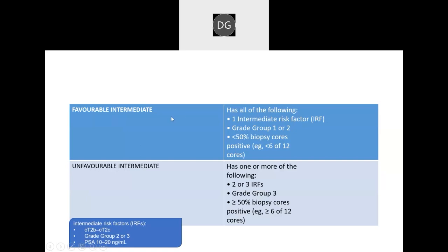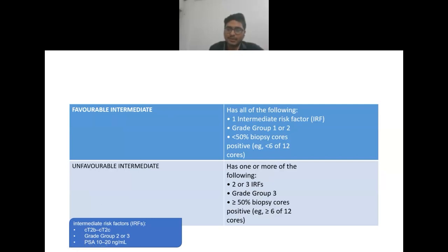Favorable intermediate has all of the following: one intermediate risk factor, grade group 1 or 2, and less than 50% biopsy cores positive (less than 6 of 12 cores). Unfavorable intermediate has one or more of the following: 2 or 3 intermediate risk factors, grade group 3, or more than 50% of biopsy cores positive (more than 6 of 12 cores).